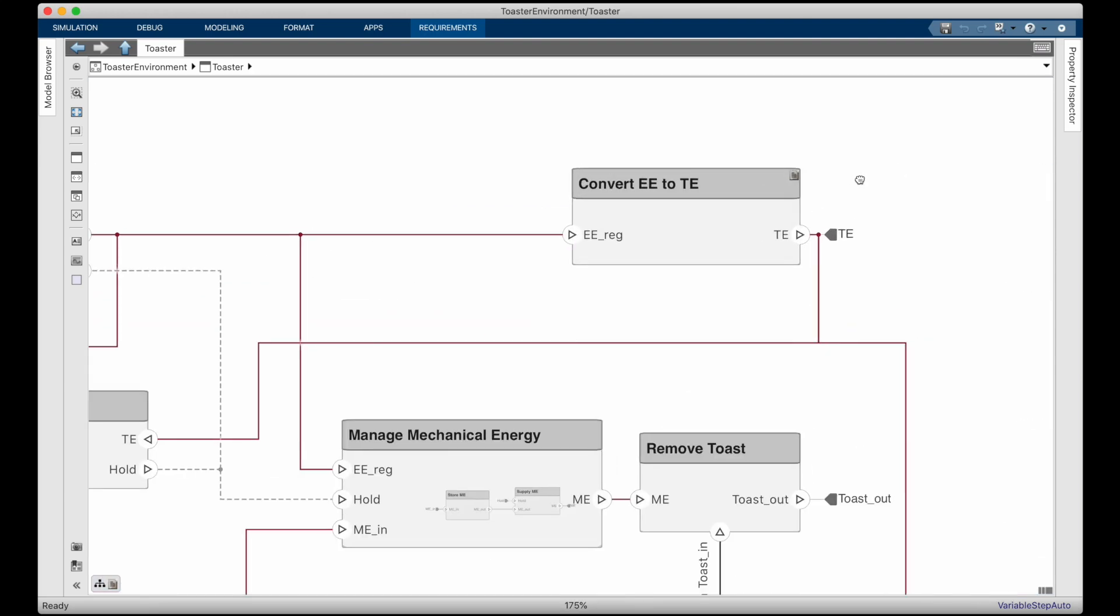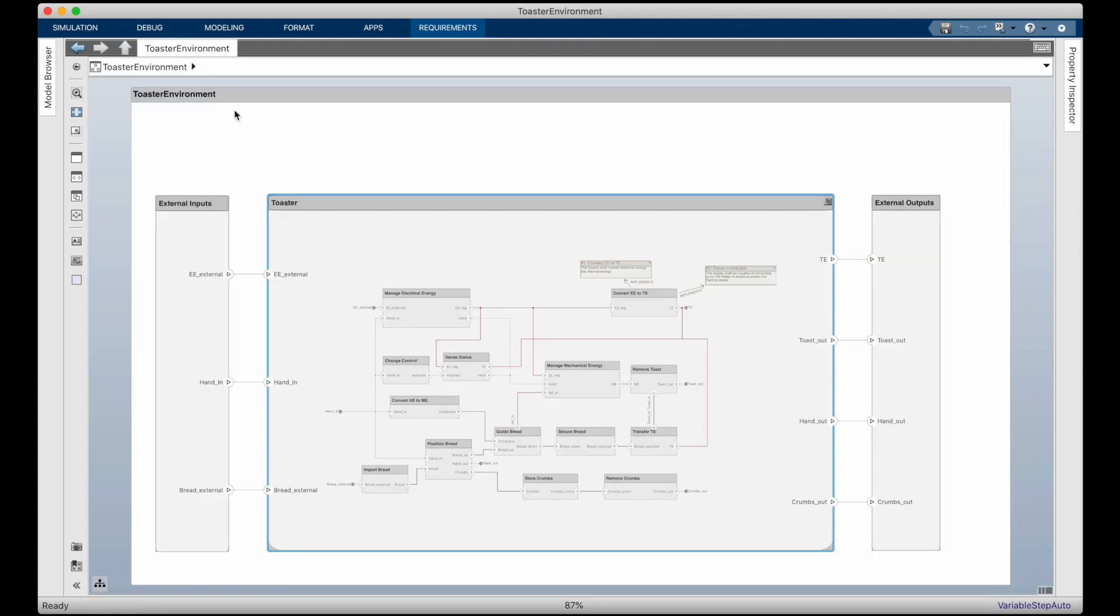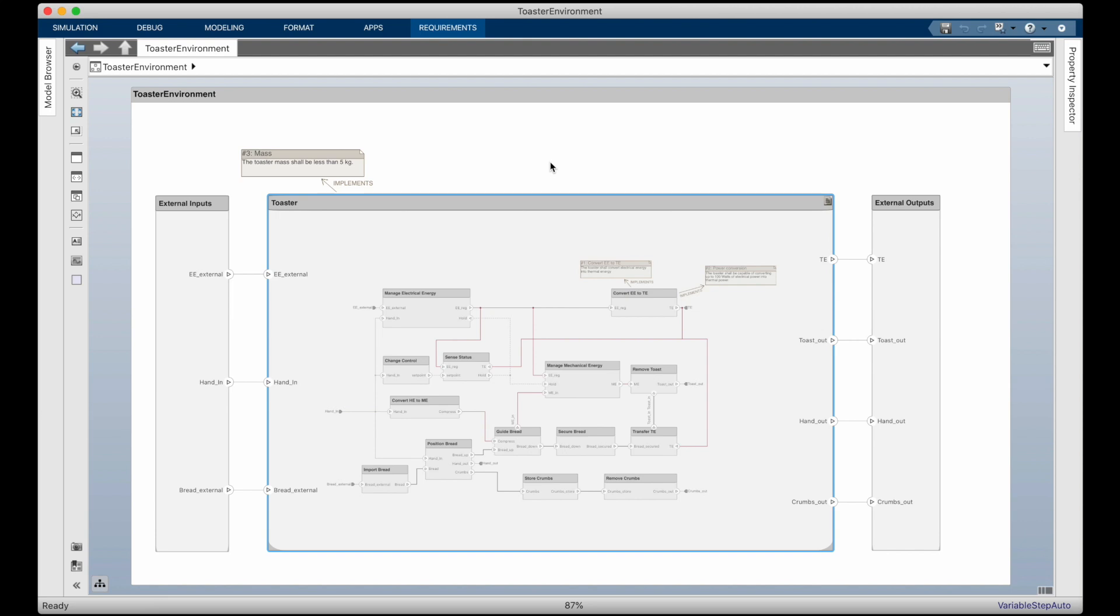A functional requirement specifies functions. So for the toaster, we might have: the toaster shall convert electrical energy into thermal energy. This is a requirement that we can verify by inspecting the toaster design and seeing that the function exists. For a performance requirement, we might say that the toaster shall be capable of converting up to 100 watts of electrical power into thermal power. And again, this requirement could be verified by analyzing the design, and ultimately through test once the toaster is built. A constraint requirement might be something like the toaster mass shall be less than 5 kilograms, which we verify by analyzing the mass budget early in the design, and then through inspection by weighing the actual toaster. So those are three of the requirements that we claim the toaster must satisfy, and a few different ways to verify that the design will meet those requirements.